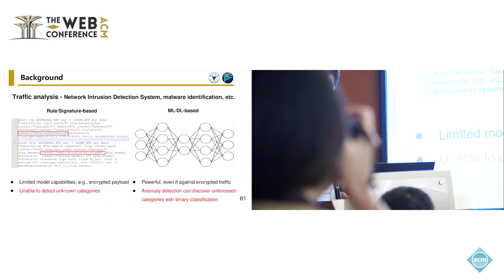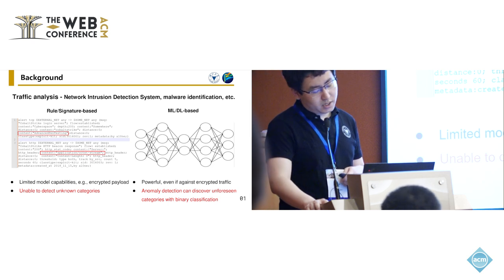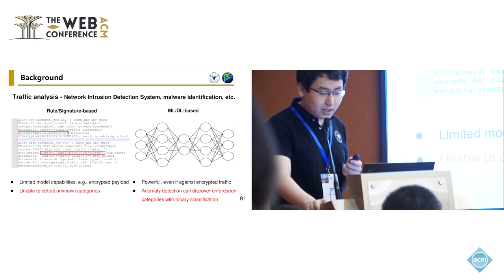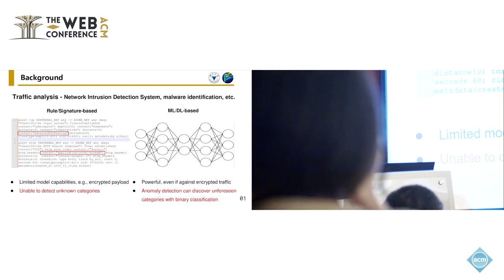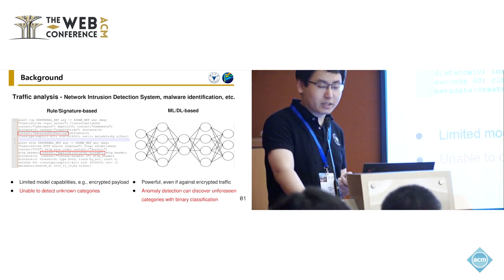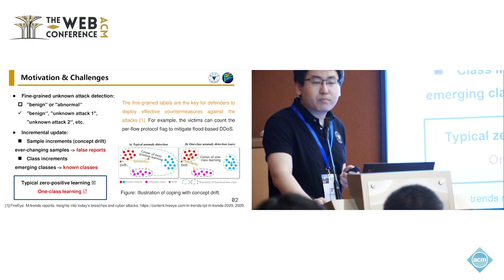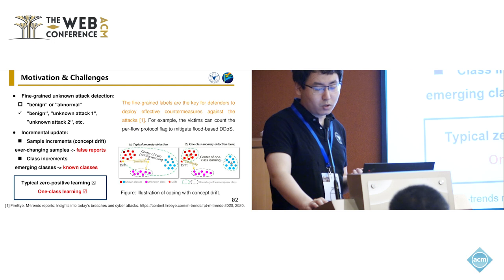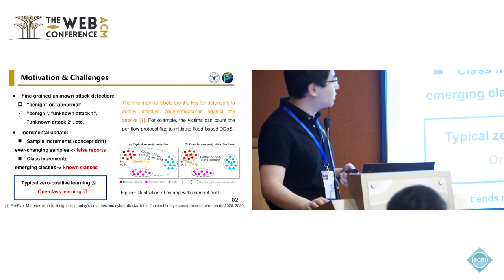The background refers to network traffic analysis. There are two types of methods. The first one is the rule-based, which has limited model capabilities and is unable to detect unknown classes. In contrast, the machine learning and deep learning-based methods can perform anomaly detection to discover unknown attacks. Nonetheless, these methods mainly perform binary classification, overlooking the fine-grained labels, for example, unknown attack 1, unknown attack 2, and so on.